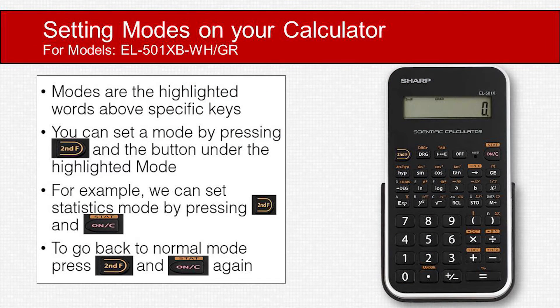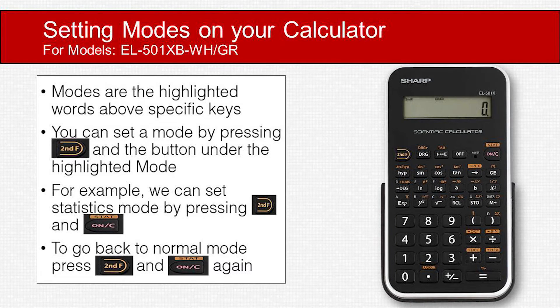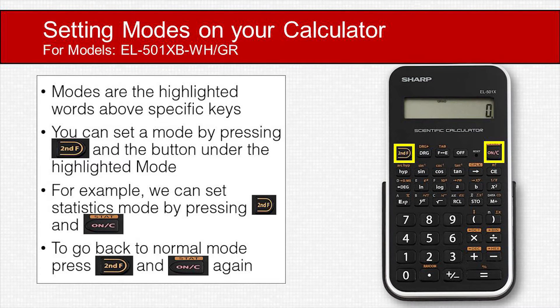Modes on the EL-501XB-WH and XB-GR are highlighted above specific keys. You can set a mode by pressing the second function and the button under the highlighted mode. For example, we can set statistics mode by pressing second function and ON. To go back to normal mode, press second function and ON again.